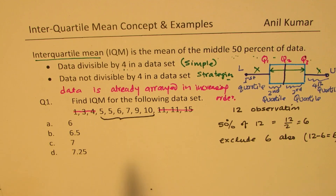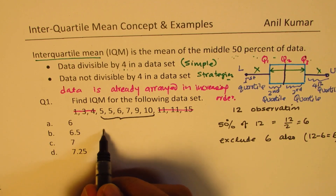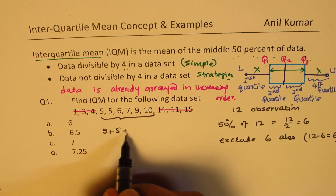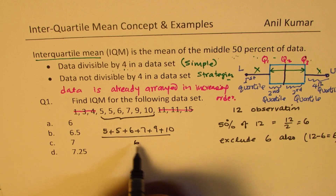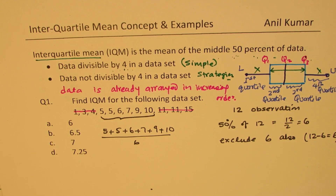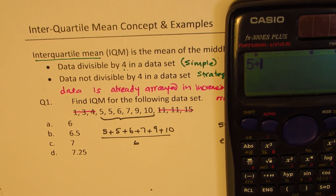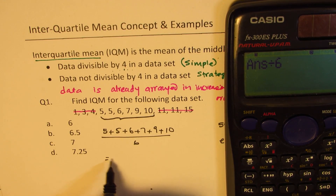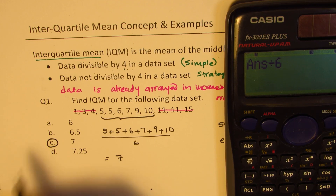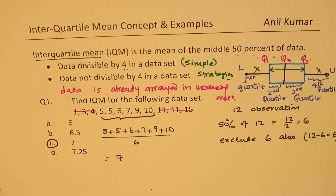The mean will be: 5 + 6 + 7 + 8 + 9 + 10 divided by 6. That gives us an answer of 7.5 — wait, let's do it: 5 + 6 + 7 + 8 + 9 + 10 divided by 6 results in 7. So our answer is 7. When we have a multiple of four it is straightforward — we simply remove the unwanted data and compute the mean.